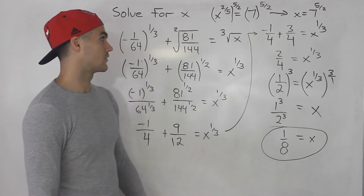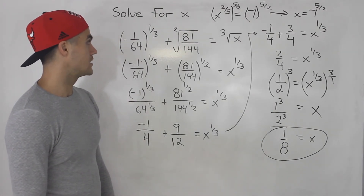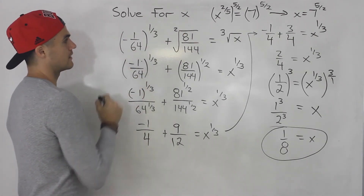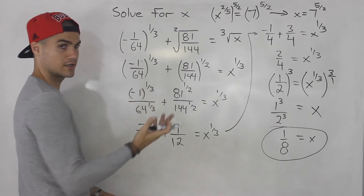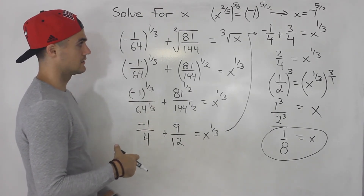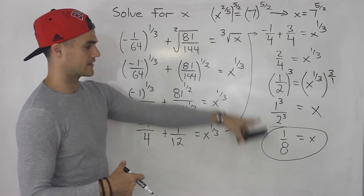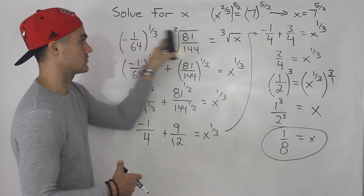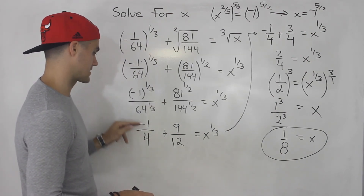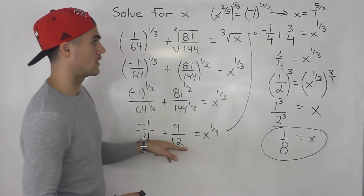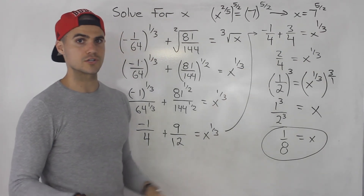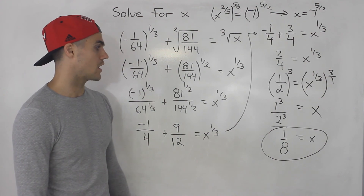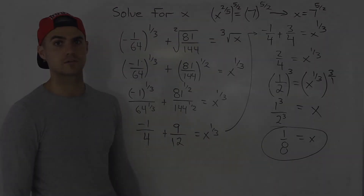Final answer: 1 over 8. You can check your answer by plugging everything into your calculator. The third root of 1 over 8 is just 1 over 2. And that makes sense, because negative 1 over 4 plus 9 over 12 gives you 2 over 4, which is 1 over 2. There's a lot of opportunity in this chapter to check your answers with your calculator. See you later.